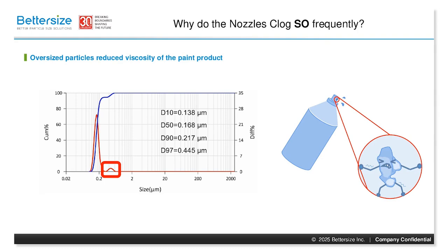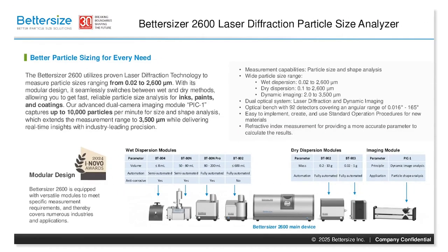The Betasizer 2600 helped this paint provider identify and quantify oversized particles, allowing them to adjust their process with an optimized grinding setup and finer filtration. This award-winning instrument, recognized with the 2024 INOCO award, offers unparalleled measurement capabilities with its modular design, handling everything from paint suspensions to pigment dry powders.